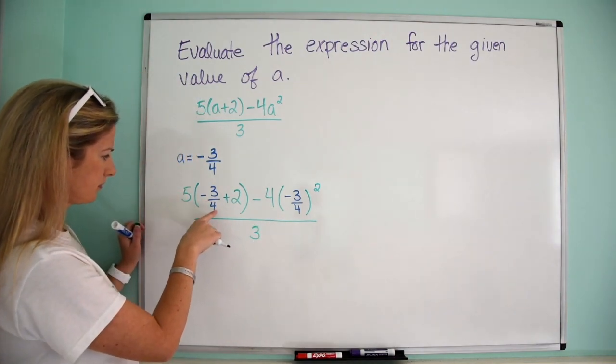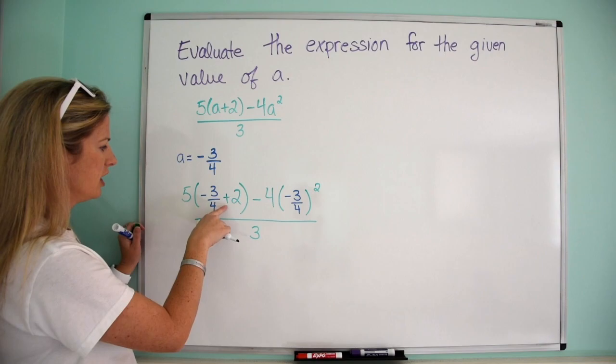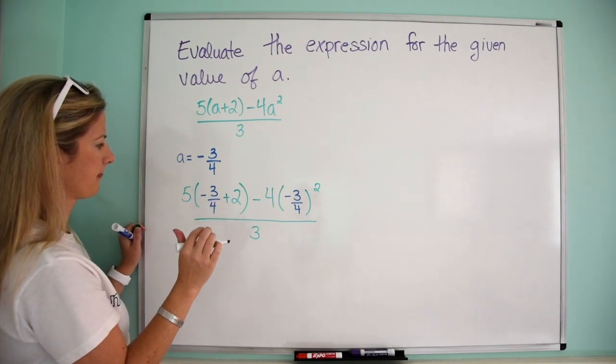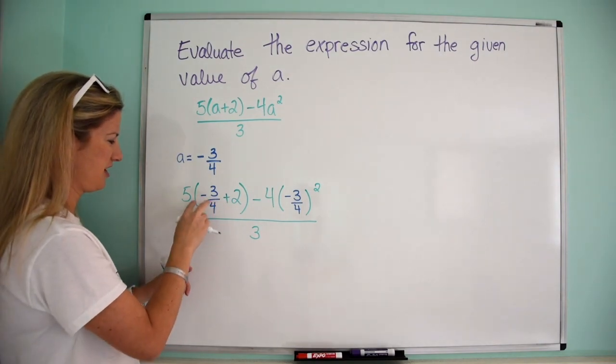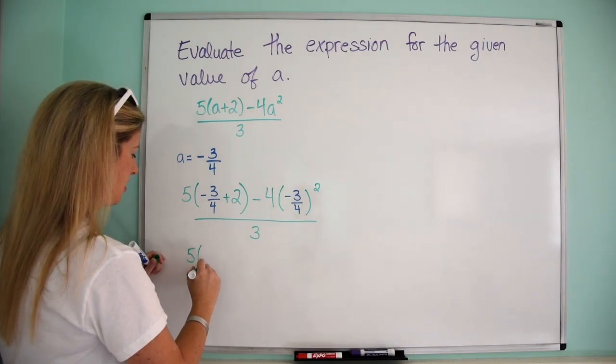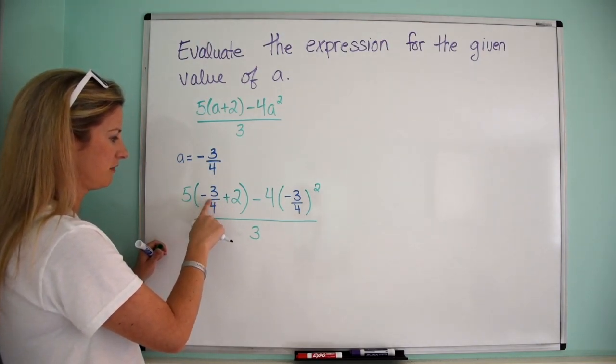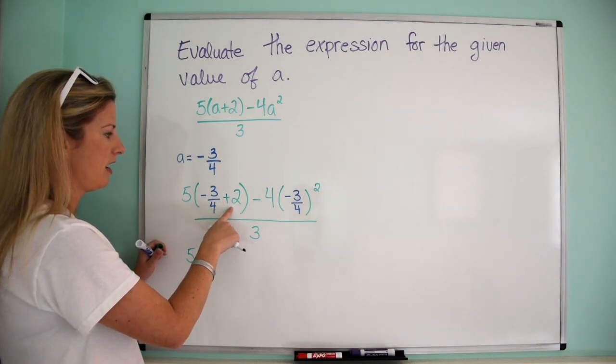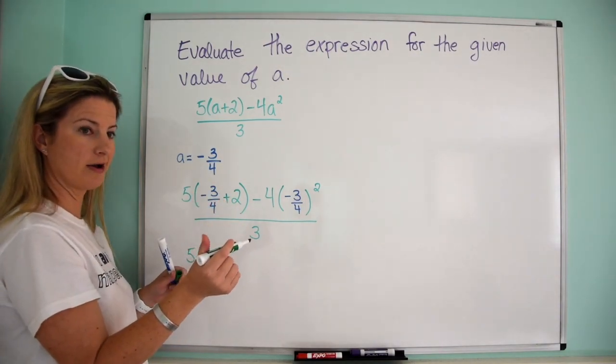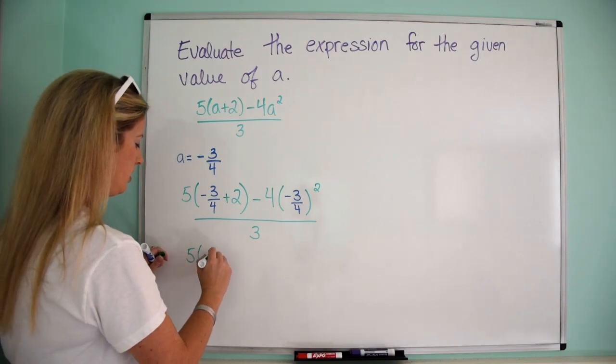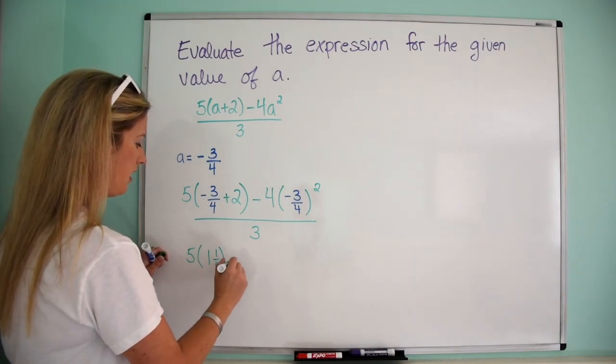Alright, so first thing that I see here is there's kind of two schools of thought here for this first piece. So negative 3 fourths plus 2, I could say that's negative 3 fourths plus 2, which would be 1 and a quarter, so that would be 1 and 1 fourth, minus...